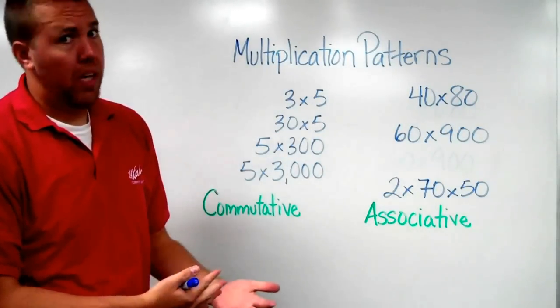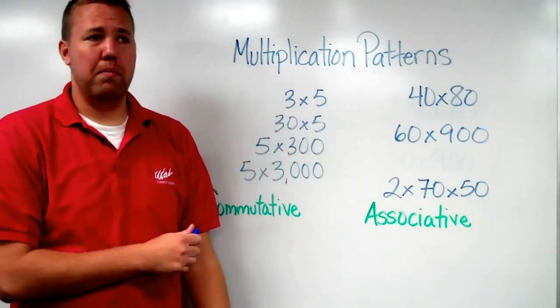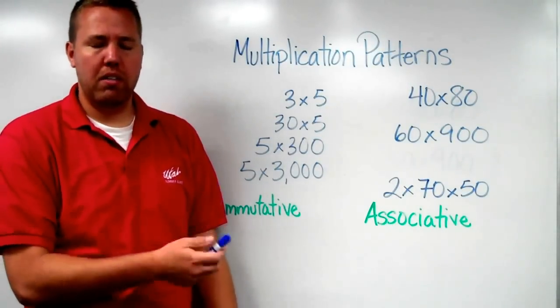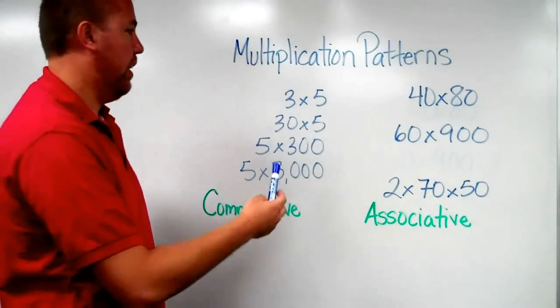First off, we need to know our multiplication facts. 1 by 1 up to 9 by 9, 10 by 10 at least. 12 by 12 is ideal, but 1 by 1 to 9 by 9 will help greatly.